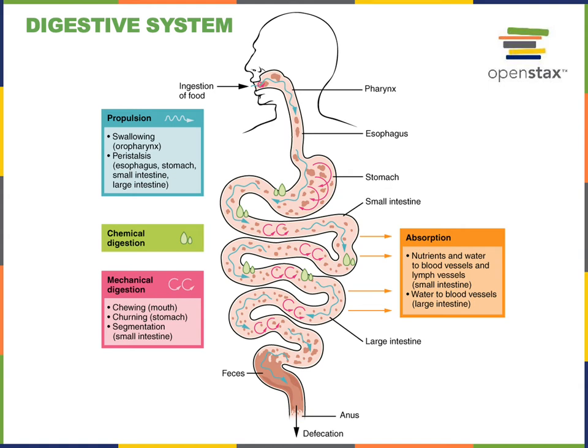Another major function of the digestive system is propulsion. Swallowing, also known as deglutition, is the process where the food that's been chewed up in mastication and mixed with saliva to form a rounded mass known as a bolus is then moved from the oral cavity down through the pharynx into the esophagus and then down through the esophagus into the stomach.